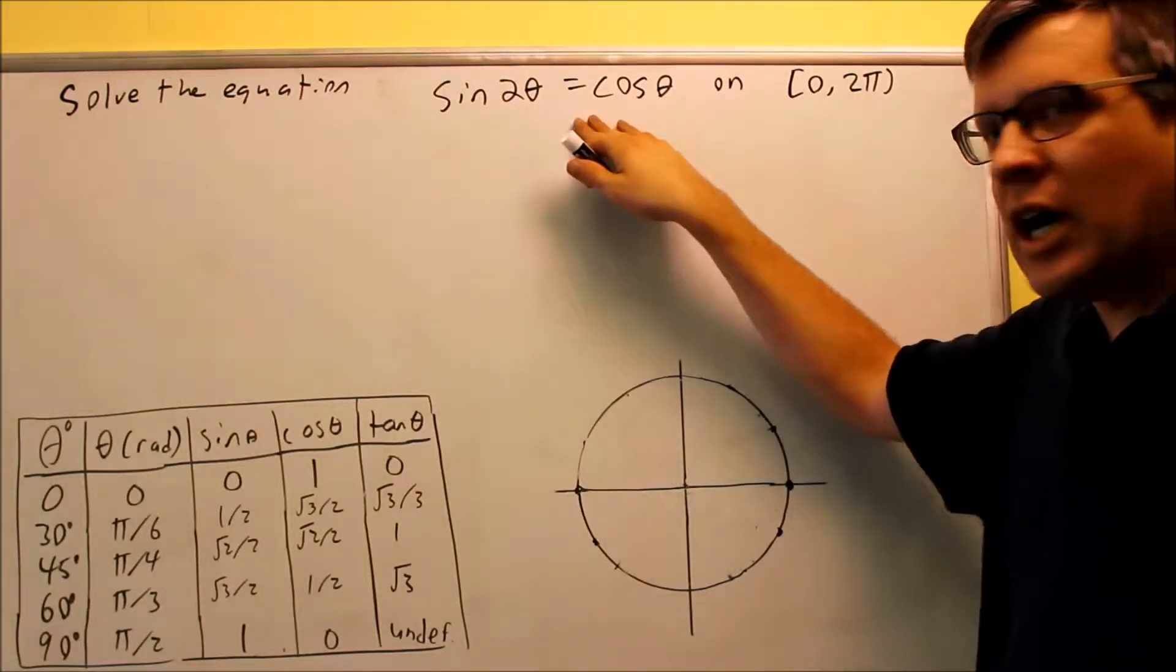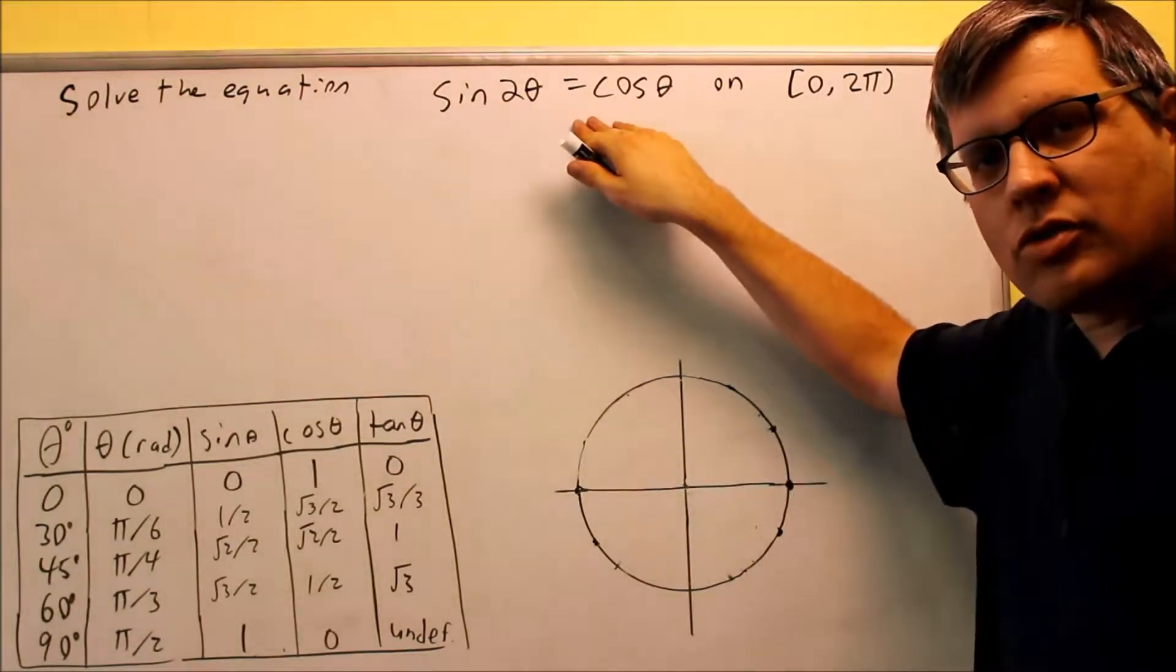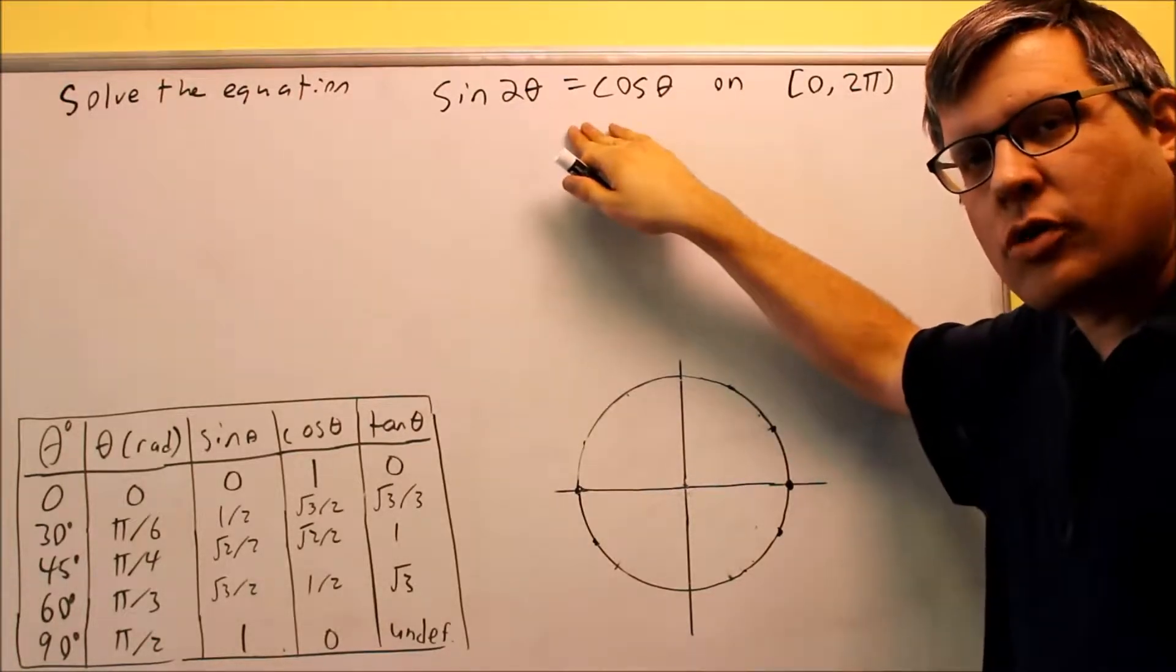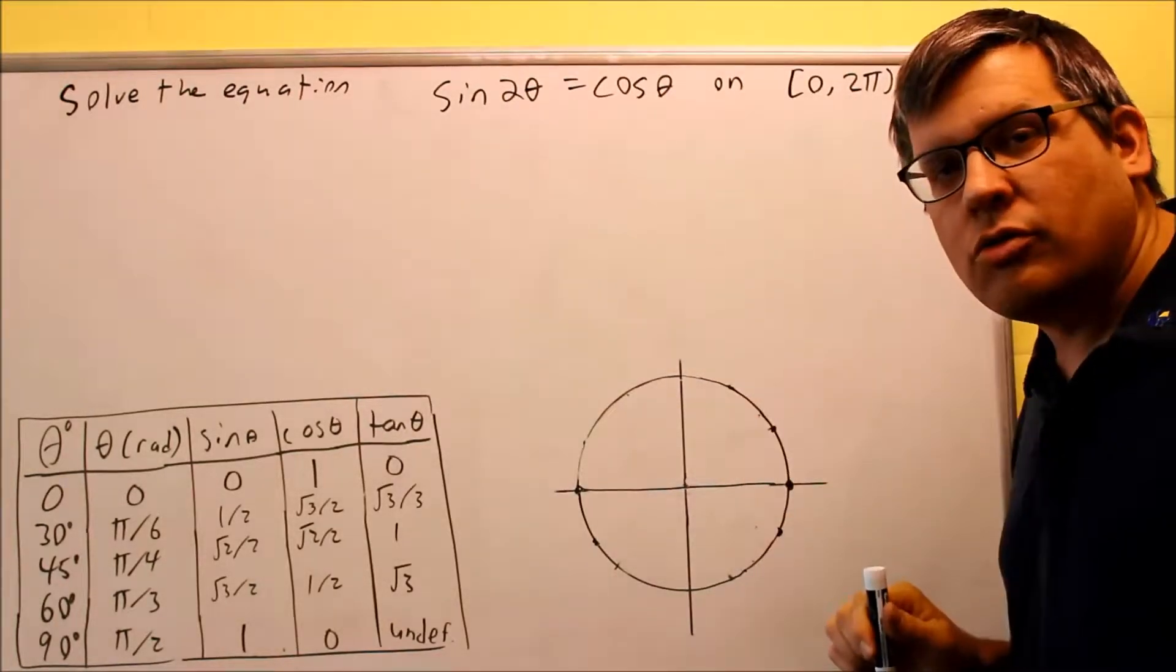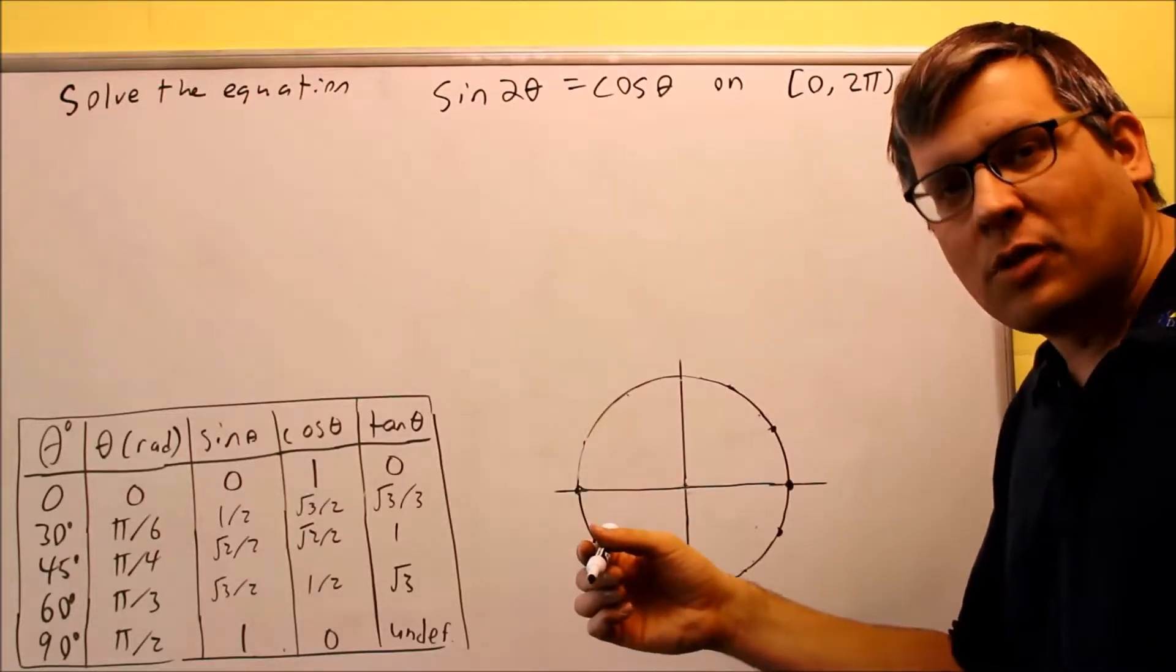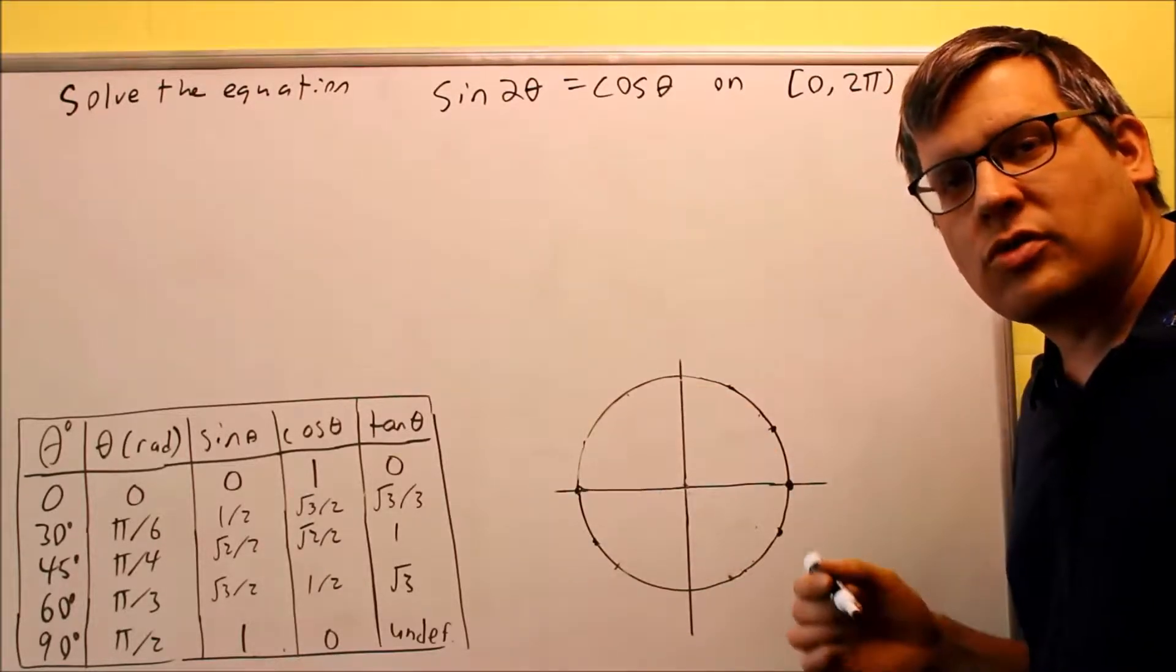Okay, for this one, there's another problem where we don't have it set equal to 0. So again, for these problems, the first thing you always want to do is make sure you set it equal to 0 because that way if you factor it in a later step, then you can set both of them equal to 0 and solve for it.